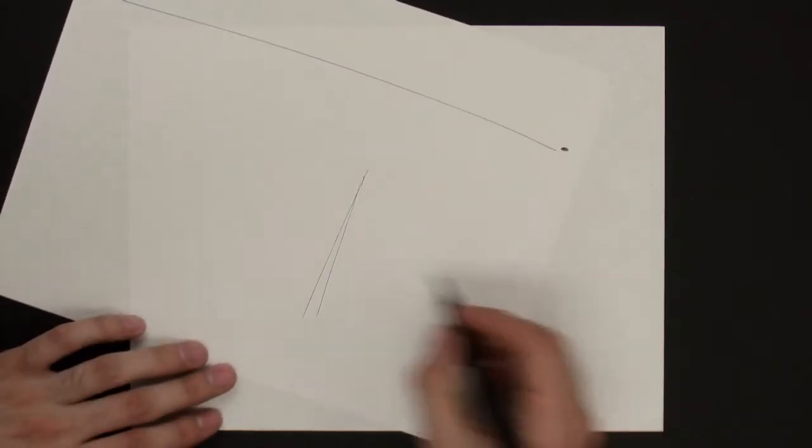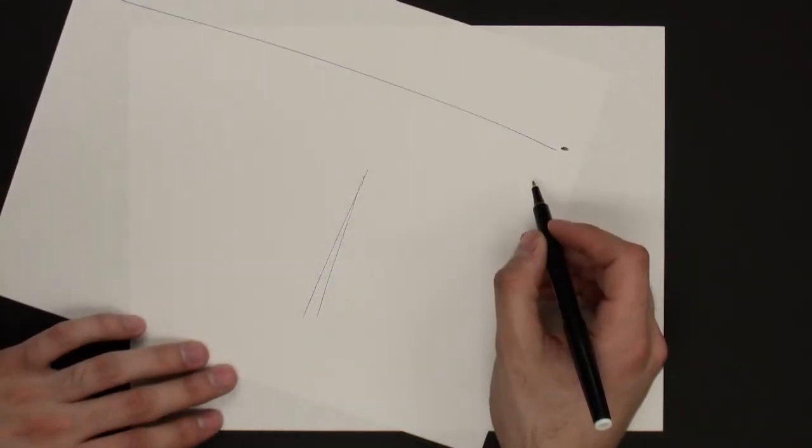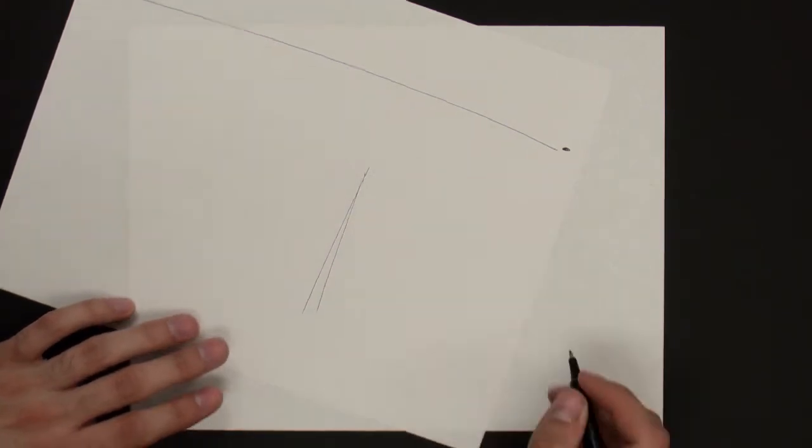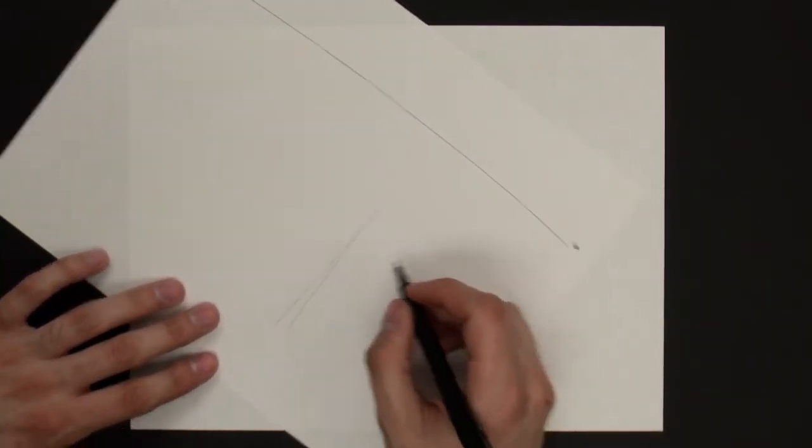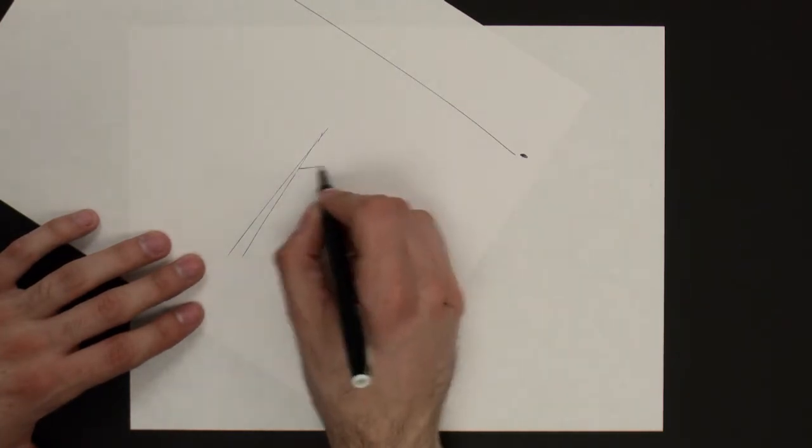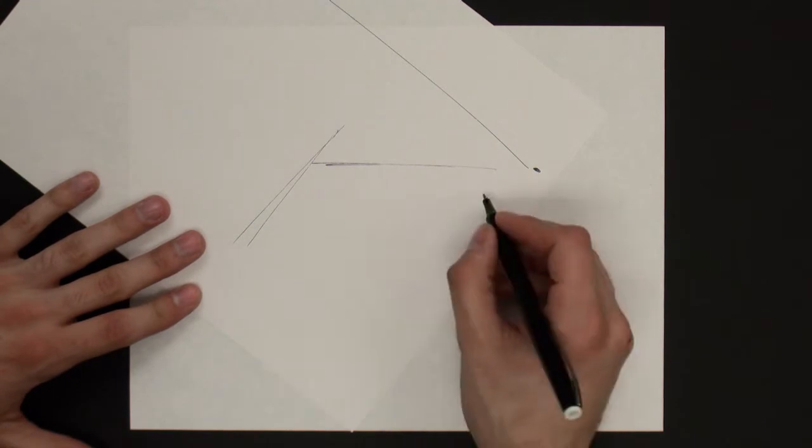And so what we're going to do is draw the edges back to the vanishing points. So remember, the vertical lines are straight up and down, but the edges converge to the vanishing points. So let's go ahead and lay down something like a rectangular prism.